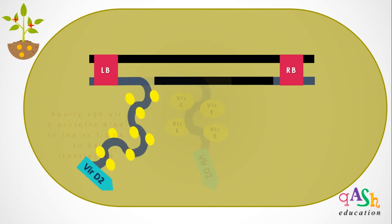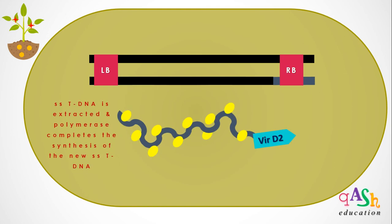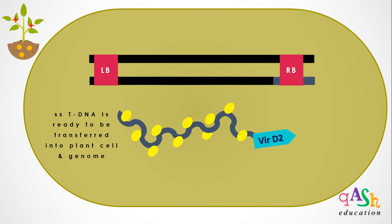The process continues: VirD2 keeps pulling out the single-stranded T-DNA copy, VirE binds to it, and the polymerase synthesizes the new T-DNA copy. After the entire single-stranded T-DNA copy has been extracted, VirD2 nicks at the left border sequence and extracts the complete T-DNA copy to be transferred. Simultaneously, the synthesis of the new single-stranded T-DNA copy replacing the original one is also completed.